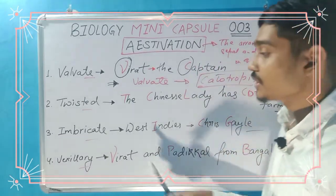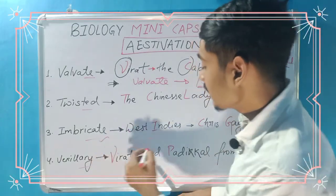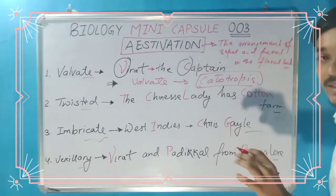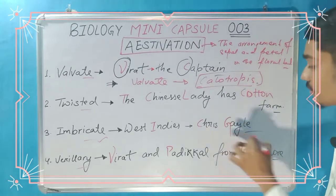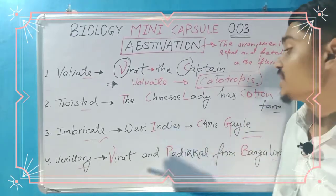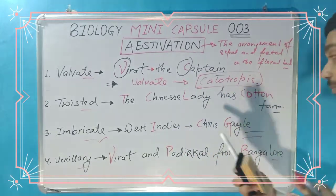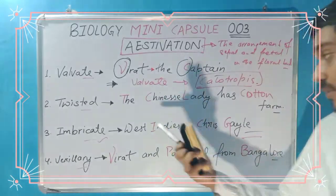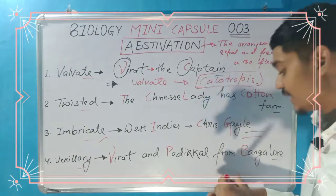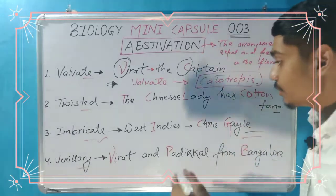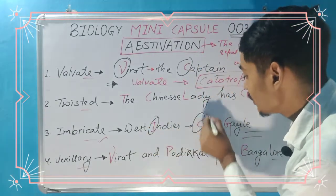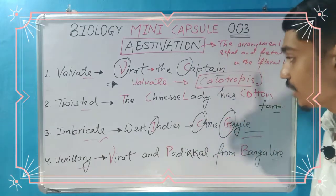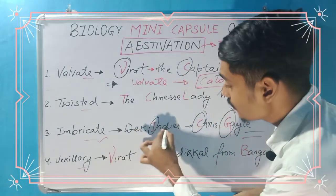Now come to the third one — imbricate. The mnemonic is West Indies Chris Gill — West Indies cricket player Chris Gayle, which is a very popular player, everyone knows. So the mnemonic is West Indies Chris Gayle. Here I have W noted, C noted, G noted — we can write those here.